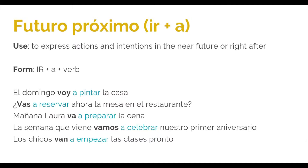Have a look at some examples. El domingo voy a pintar la casa — On Sunday I'm going to paint the house. ¿Vas a reservar ahora la mesa en el restaurante? — Are you going to book the table at the restaurant now? Mañana Laura va a preparar la cena — Tomorrow Laura is going to prepare dinner. La semana que viene vamos a celebrar nuestro primer aniversario — Next week we're going to celebrate our first anniversary. Los chicos van a empezar las clases pronto — The children are going to start classes soon.